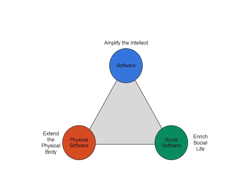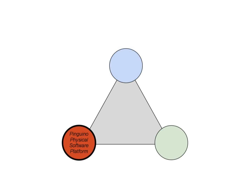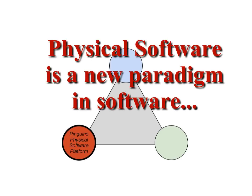They are all software, but for the PC the software tries to amplify our mind and our intellect. For the social software, the software tries to make our social life better — it enriches our social life. And then for physical software, the software tries to extend our physical body in the way that it touches reality and makes it possible for the software to participate in physical reality like our bodies do. It is within this framework that we can call Pinguino a platform for this new physical software universe.